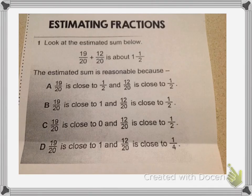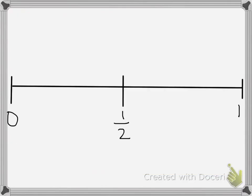Here's an example problem for us to look at. First, I need to round my fractions. I have 19 twentieths and 12 twentieths. So we start with 19 twentieths, and we look at a number line.